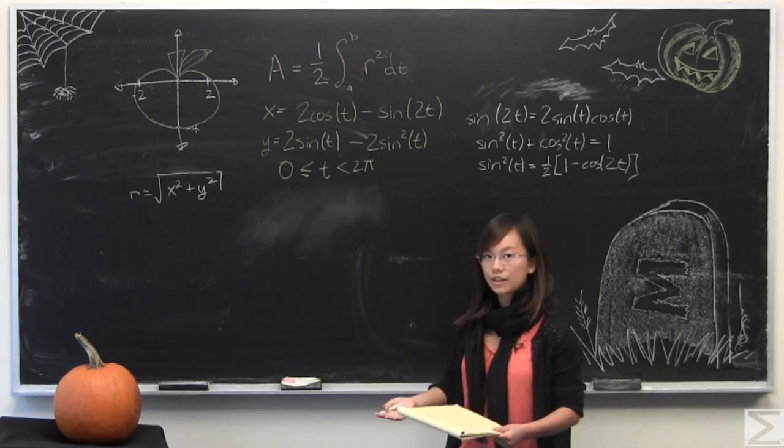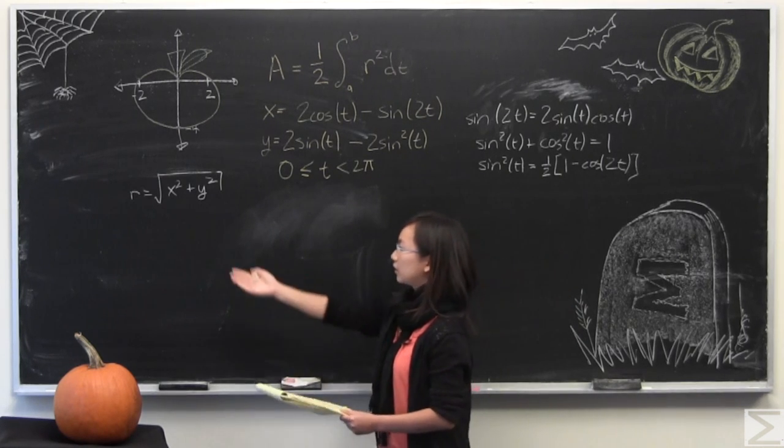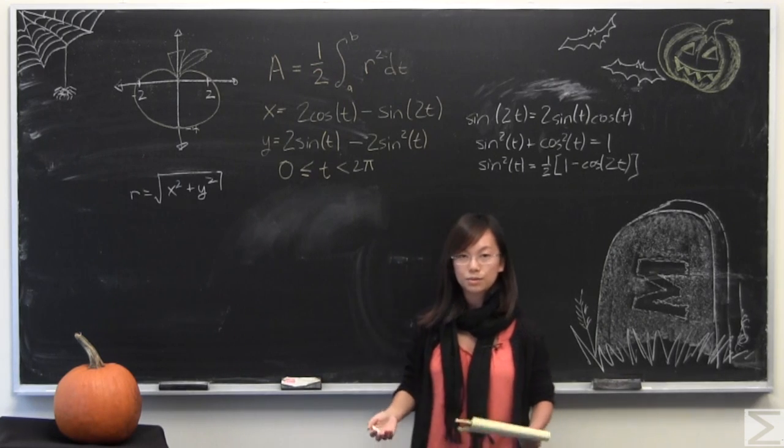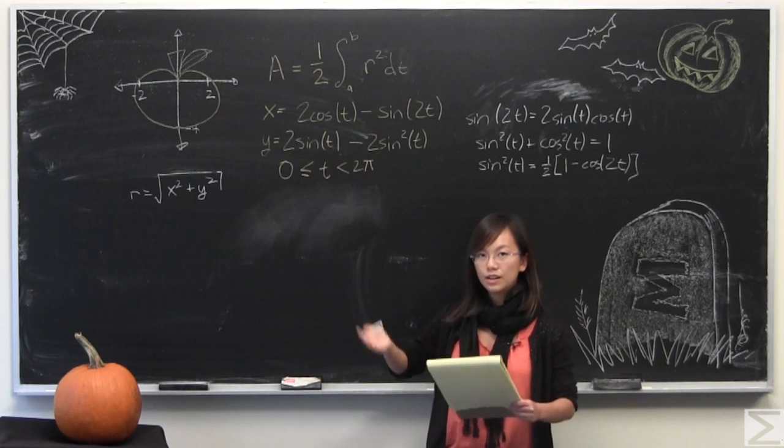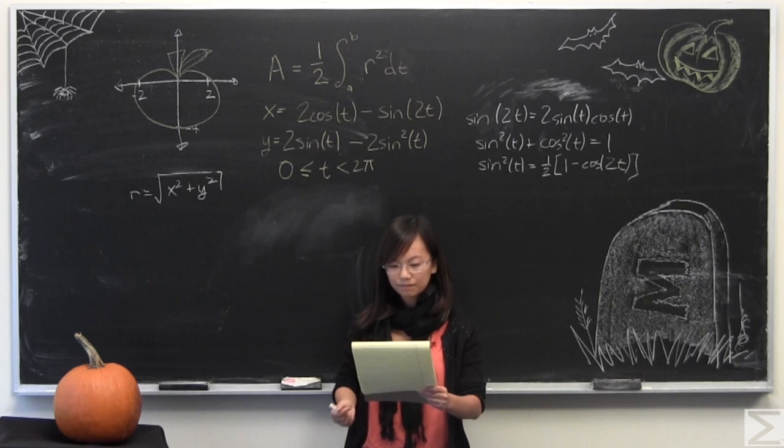I'm going to start by recognizing that you can calculate the area of a graph given an r which we can find from this over here is equal to the square root of x squared plus y squared by saying A is equal to one-half integrate from 0 to 2π r squared dt in this case.